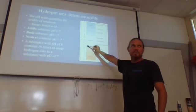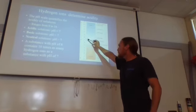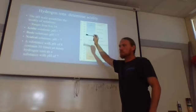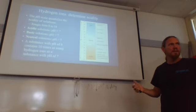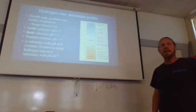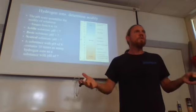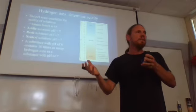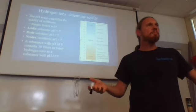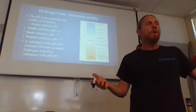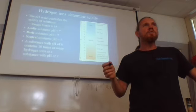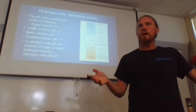A pH of 4 has a thousand times the hydrogen ion concentration as something with a pH of 7. It's a logarithmic scale — and a negative logarithmic scale, because the lower the number the higher the concentration. So technically the definition of pH is the negative log of the hydrogen ion concentration of a solution.